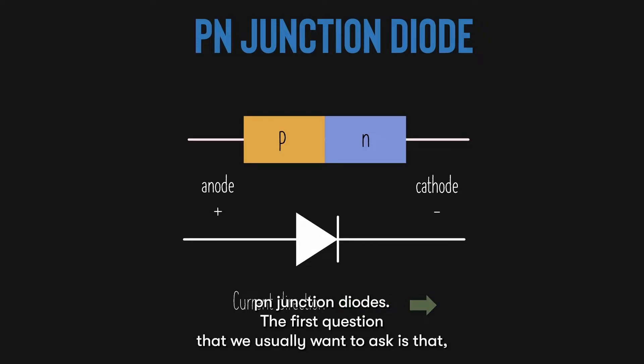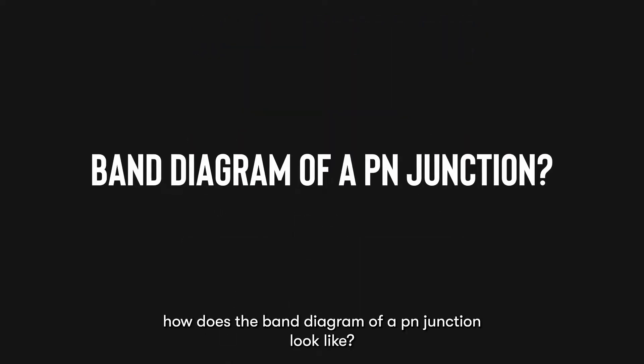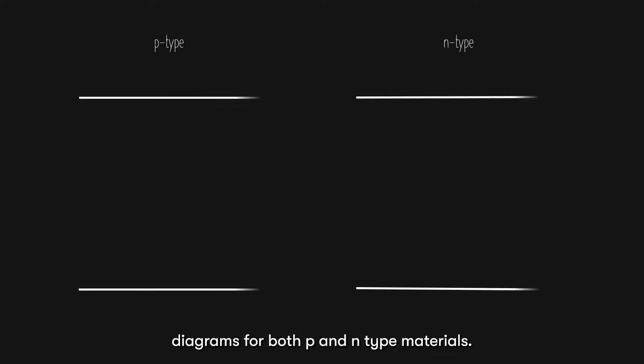The first question that we usually want to ask is, how does the band diagram of a p-n junction look like? Well, logic tells us that it somehow must be a combination of the band diagrams for both p- and n-type materials.